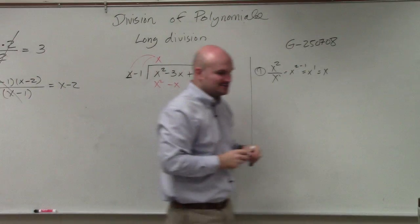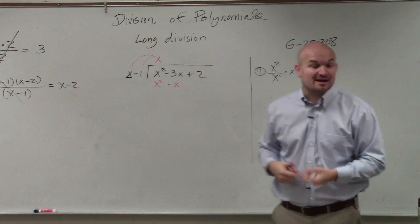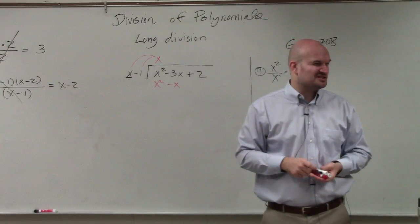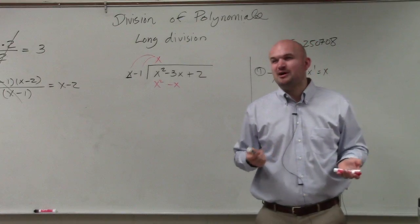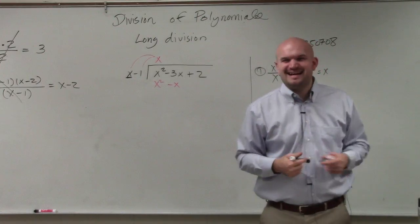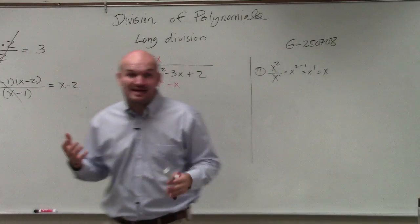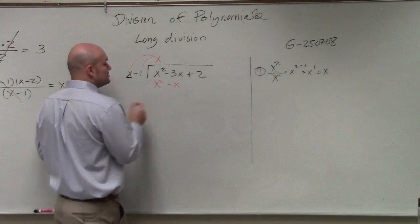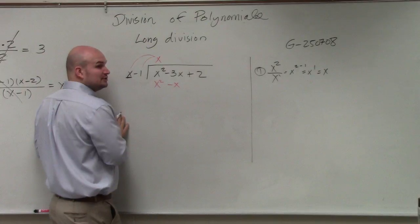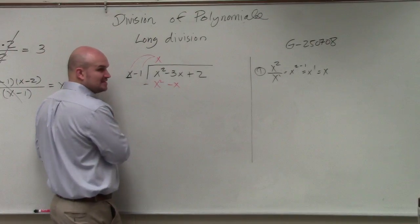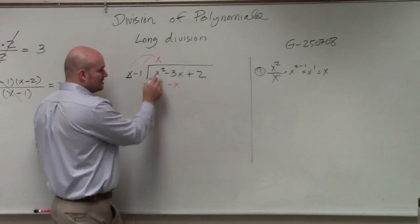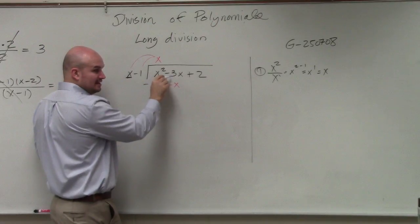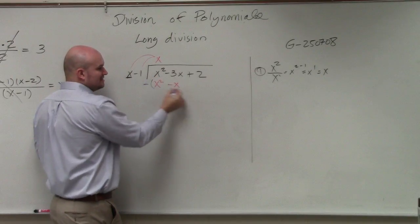Now this is where — I joke it's 99%, but really it's about 70% — here's where a majority of students make mistakes in long division. Make sure you pay attention to this. We need to subtract, but if you just write a subtraction sign like this, students will only subtract the first term and make a mistake. Put them in parentheses.